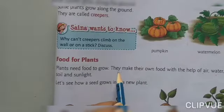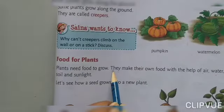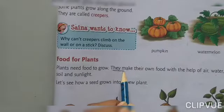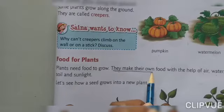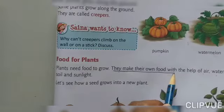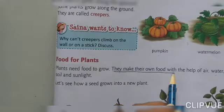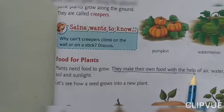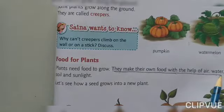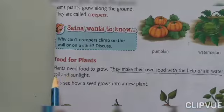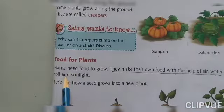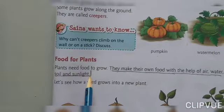Look here, dear students. What do plants need to make their own food? They need the help of air, water, soil, and sunlight. So underline in your textbook what they need: air, water, soil, and sunlight.